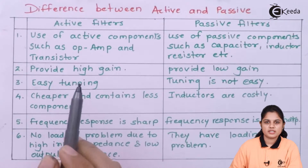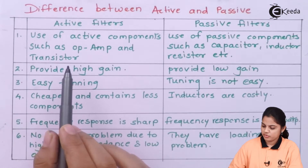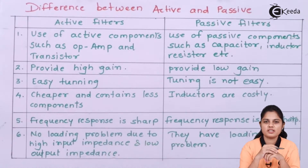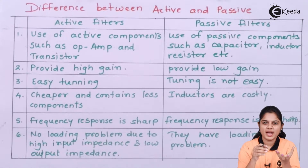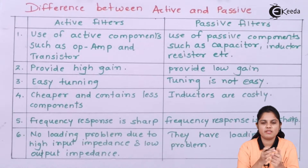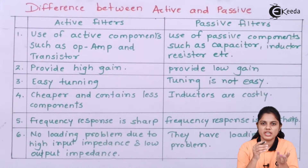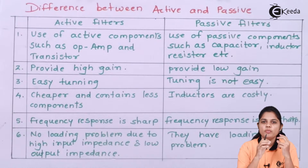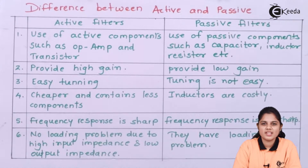Here are a few points listed as differences between active and passive filters. First point: active filters use active components such as op-amp and transistor. An op-amp is an operational amplifier where you provide a voltage supply and depending on the input, the output gets produced — it acts on the provided input and delivers the output. Similarly, with a transistor like a BJT, you give the input supply or current and the output current or voltage gets produced. When you use a transistor or op-amp to design a filter, that filter is known as an active filter.